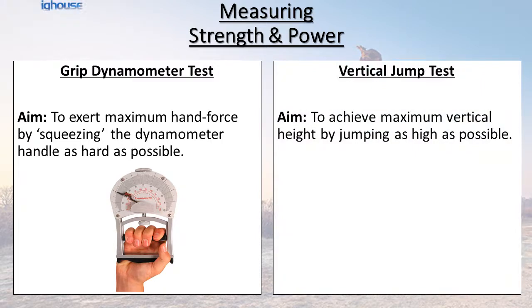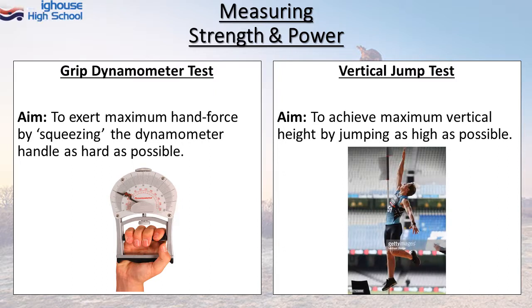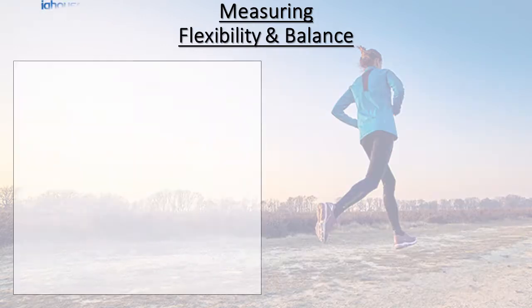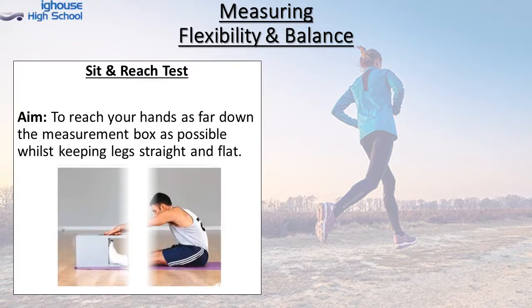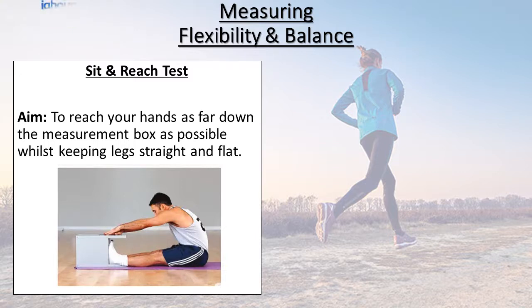Power is measured using the vertical jump test — you are trying to jump as high as physically possible and touch a marker, which will determine how high you've jumped. Flexibility is measured using the sit and reach test. This works by placing your hands as far down a measurement box as possible while keeping your legs straight and flat on the floor. The further you can reach, the higher degree of flexibility you have.